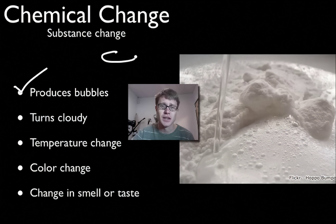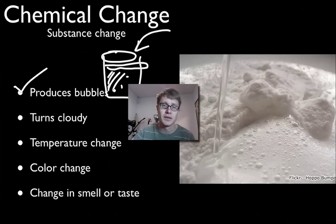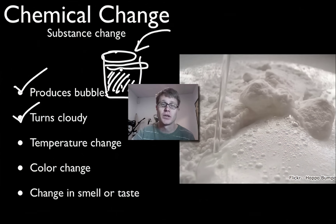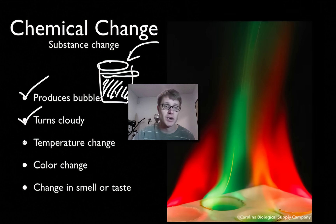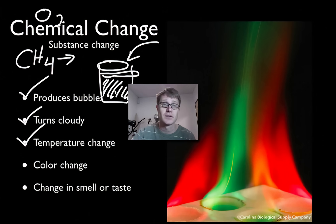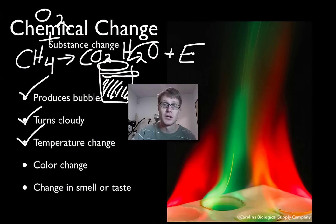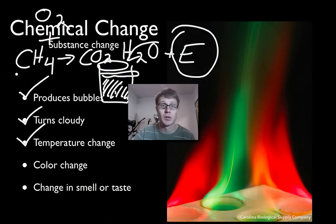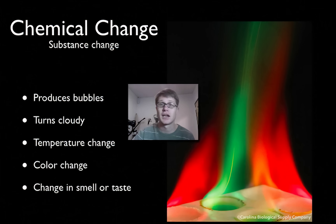If we mix two chemicals together — chemical A and chemical B — and one normally was clear but starts to get cloudy, we'd say a chemical change is probably occurring. Clouds showing up, either a cloudy liquid or clouds in the air, usually means a new particle is being formed — a new chemical. A temperature change also indicates a chemical reaction is taking place. The simplest example would be methane, which is natural gas in a Bunsen burner. When we combine methane with O2 gas, we get carbon dioxide, H2O, and a lot of energy — energy stored in the chemical bonds of the methane. We'd call that a chemical change.